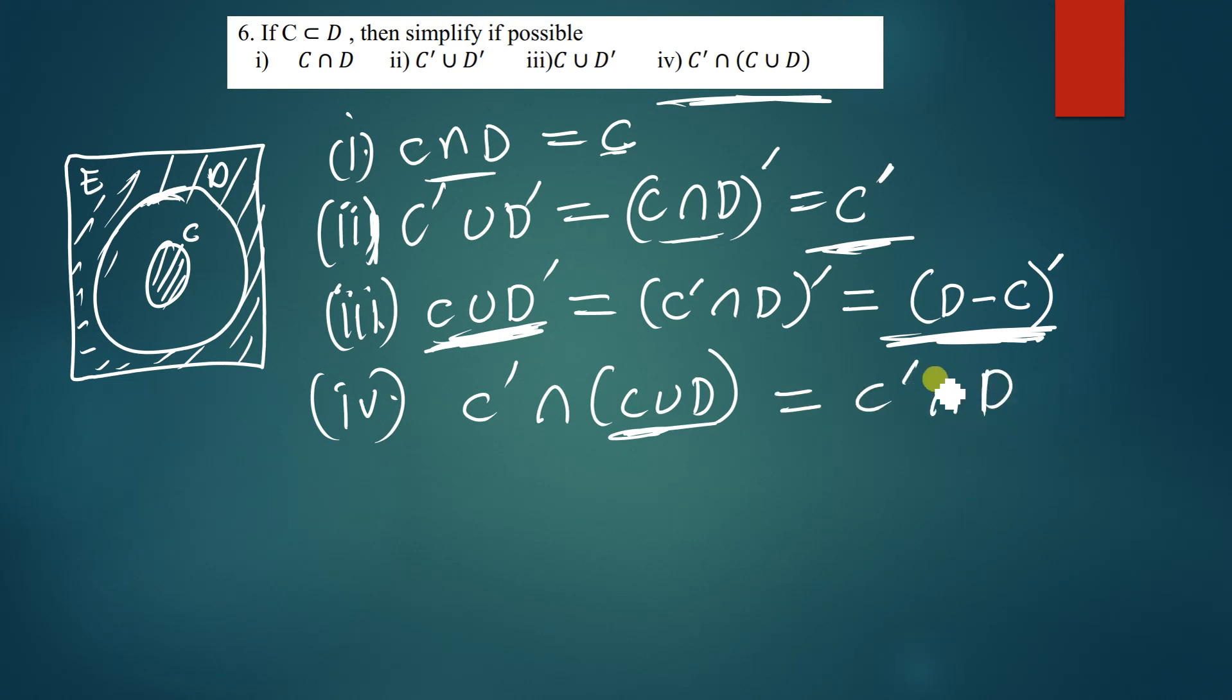And c complement intersection d is simply just the same as d minus c. So c complement intersection d is just the same as d minus c and I think this is the only way you can simplify it. I don't think there's another way you can simplify it further than this, unless you had elements.